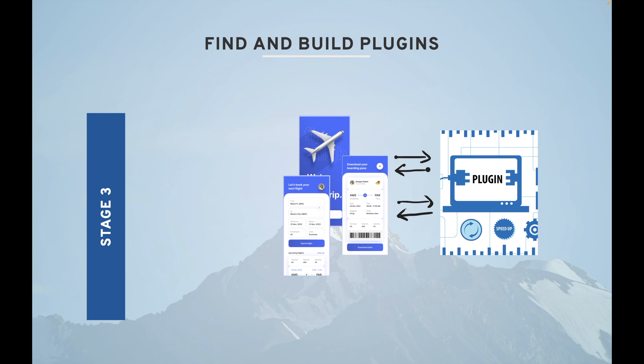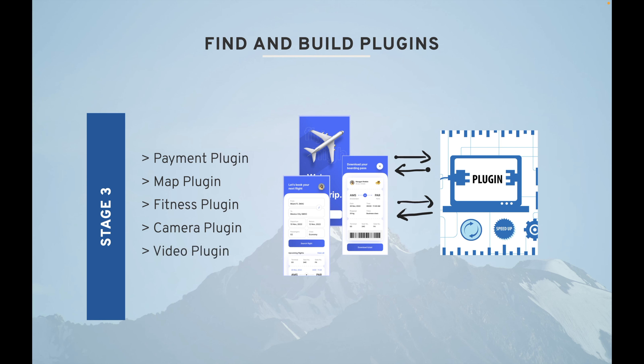Stage three is building or finding plugins. You have to make sure that you have all the plugins you need, and if a plugin doesn't exist, you have to build it yourself. Examples include: payment plugin, map plugin, fitness plugin, camera plugin, and video plugin.